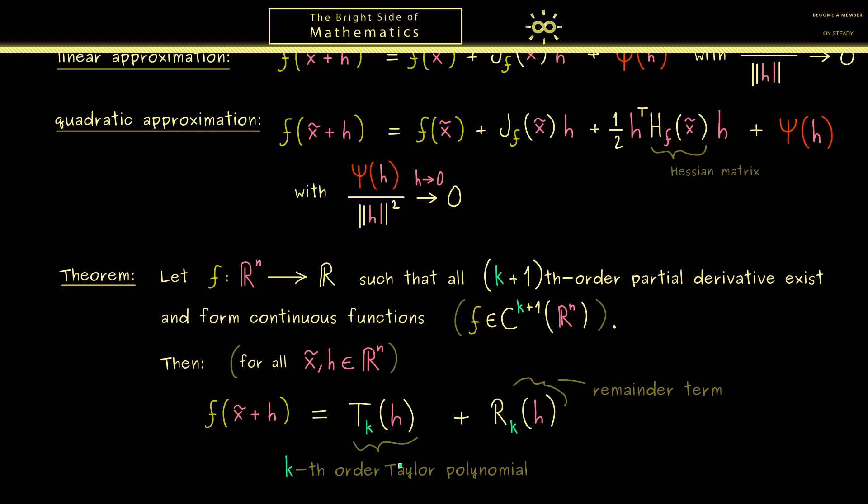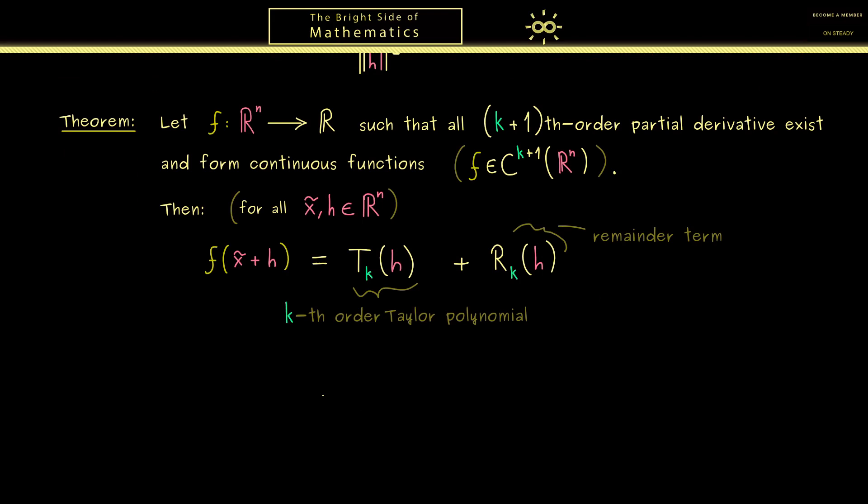However, of course still missing here is what are the formulas to calculate both terms here. And now the good thing is, they also look completely analogous to the things we already know. More precisely, the Taylor polynomial can be written as a sum over all derivatives up to the kth order. And there you might already guess, we can summarize them with the multi-index notation. So here we have the differential operator D^α, where α is a multi-index. In other words, here we need the partial derivatives of f at the expansion point x tilde. And then we simply divide the whole thing by the factorial of α.